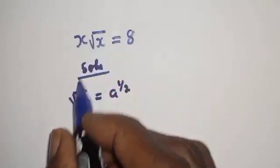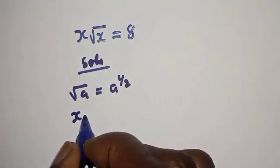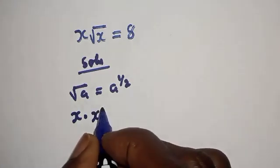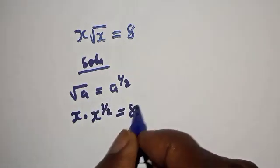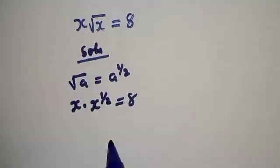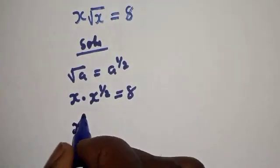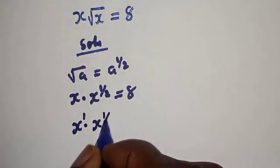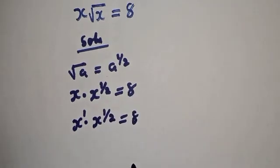Then, here we have s multiplied by s raised to the power of 1 over 2 is equal to 8. And this is s raised to the power of 1 multiplied by s raised to the power of 1 over 2 is equal to 8.